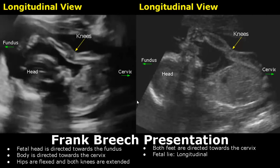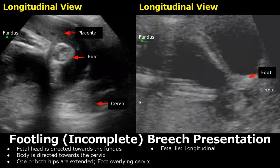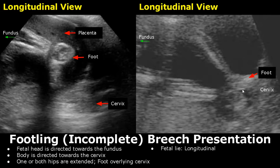In a footling or incomplete breech presentation, one foot is directed towards the cervix. One or both hips will be extended, but mainly we will see a foot right next to the cervix.